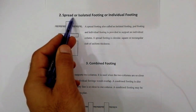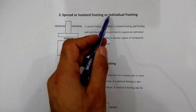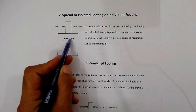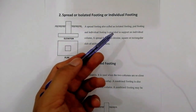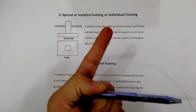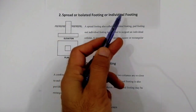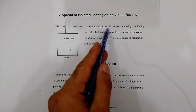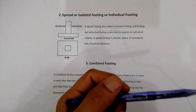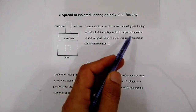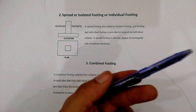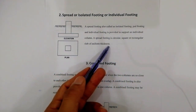The second type is spread or isolated footing, also called individual footing, because it is individual for each column. You can see in the diagram: this is the footing and this is the column. A spread footing is provided to support an individual column. It is a circular, square, or rectangular slab of uniform thickness.